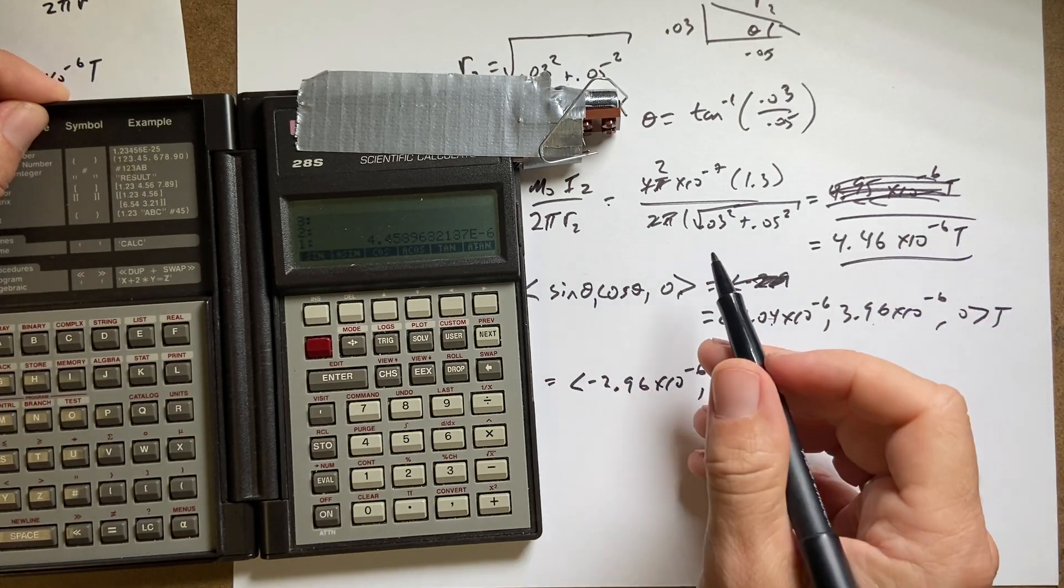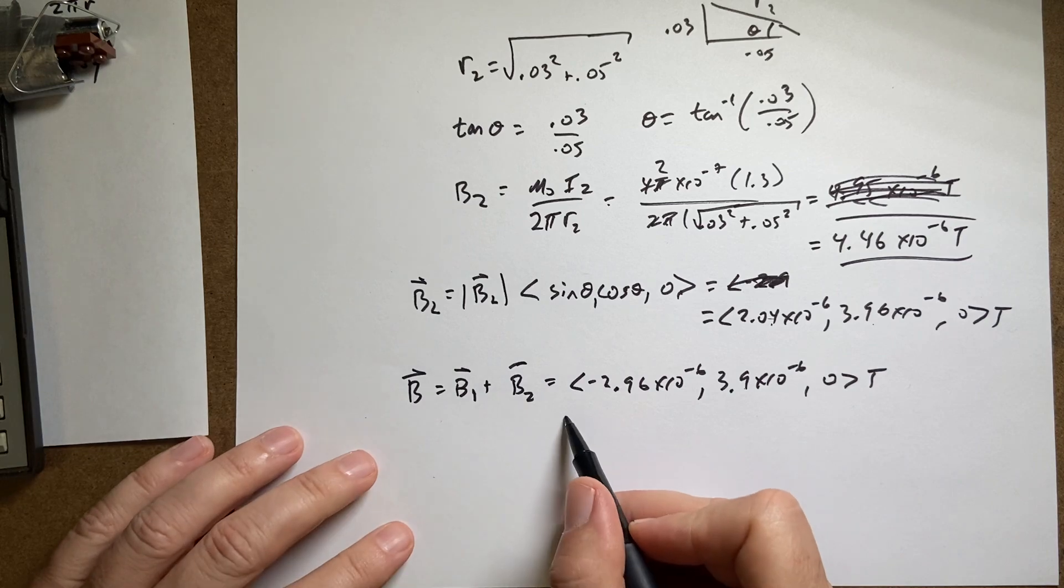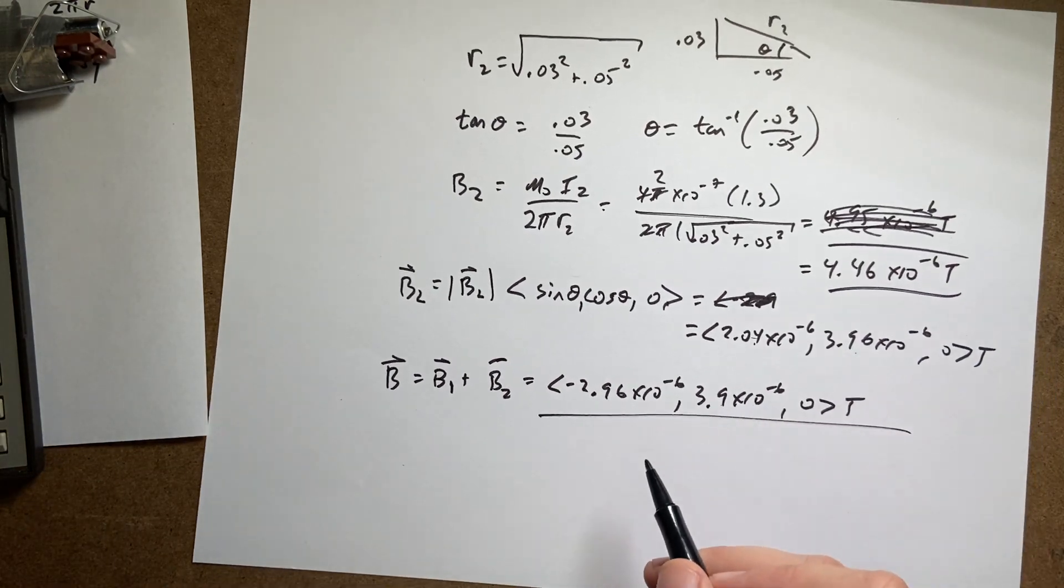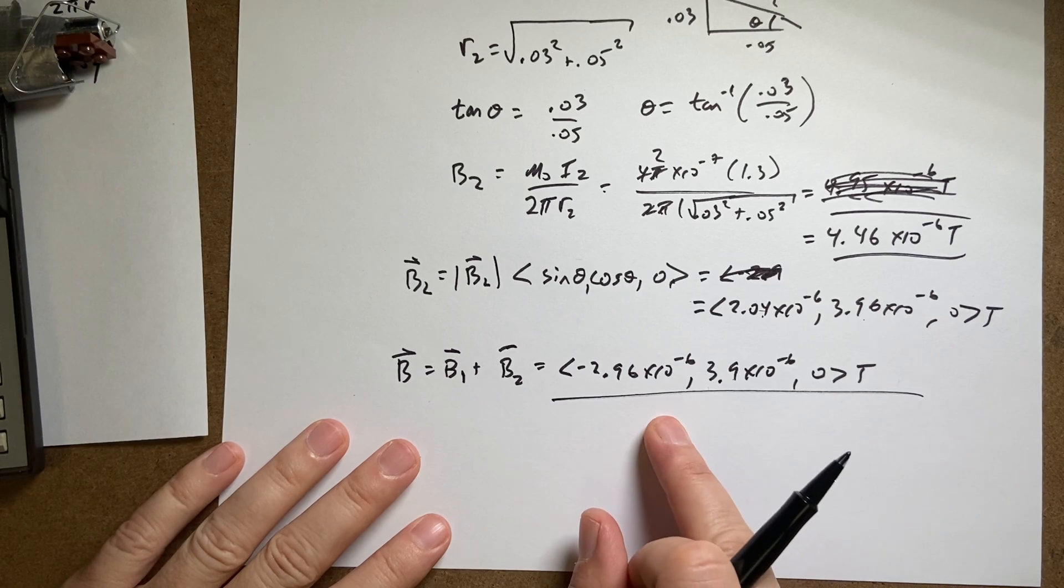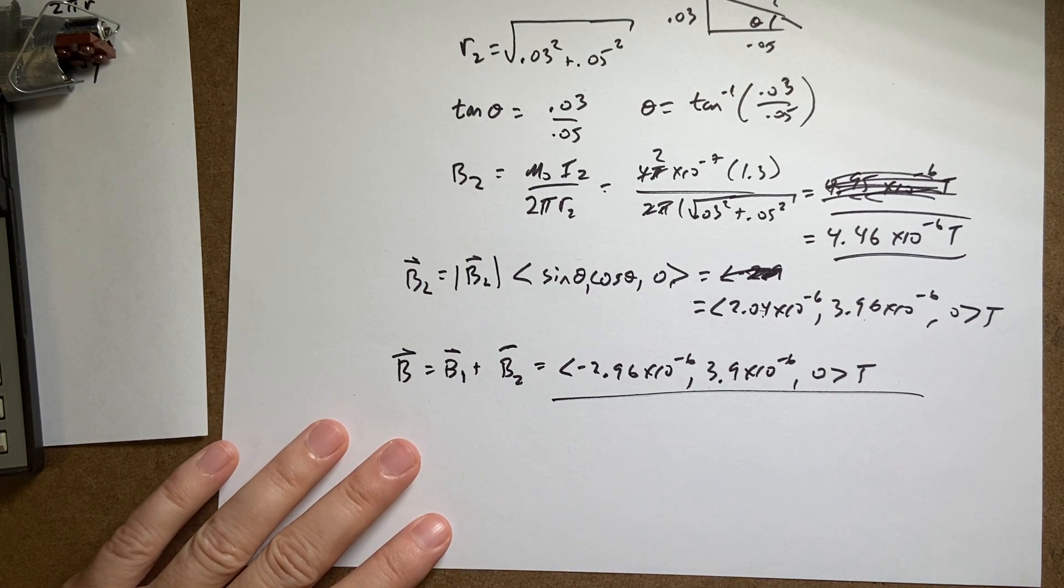This number is right because I checked it before. So that's it. If you did want to find the magnitude of this you could, but this is the answer. This is the vector magnetic field. The end.